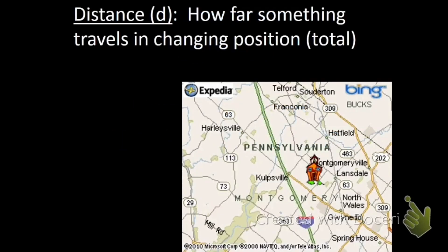In physics, if we want to know how far something travels, we use the variable distance, which is abbreviated with a lowercase d, and this tells us how far something has traveled.